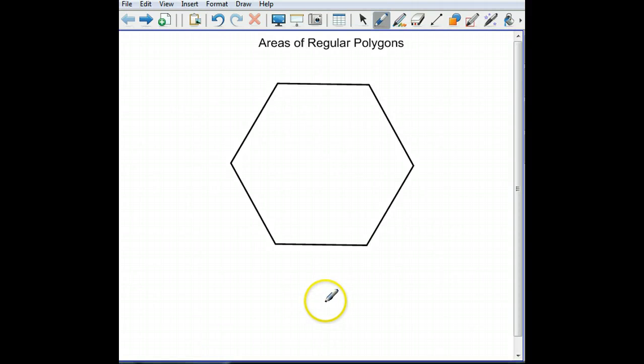Okay, to find the area of a regular polygon, we first have to recognize that this only works with regular polygons, which means that every side is congruent. All sides are the same length.